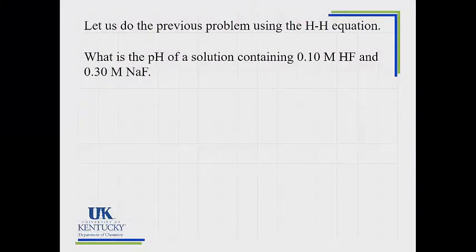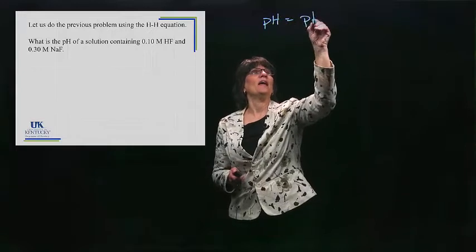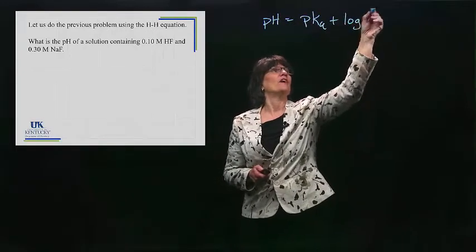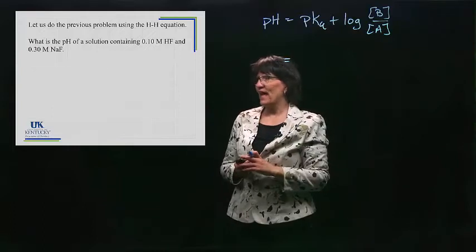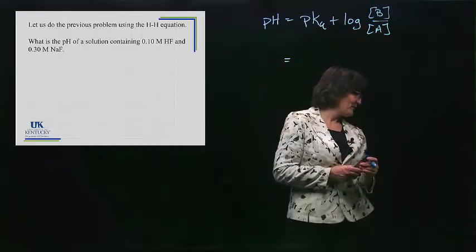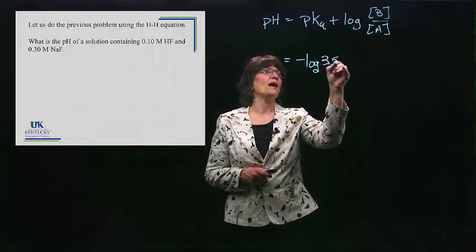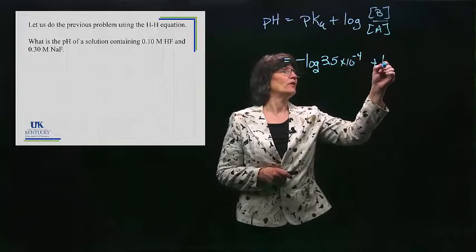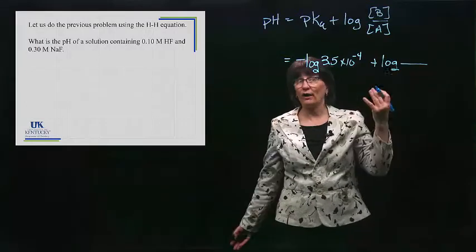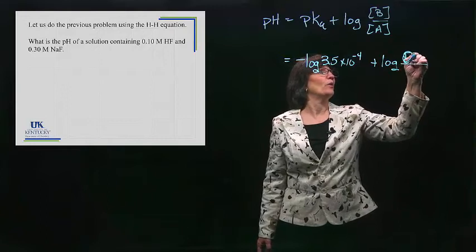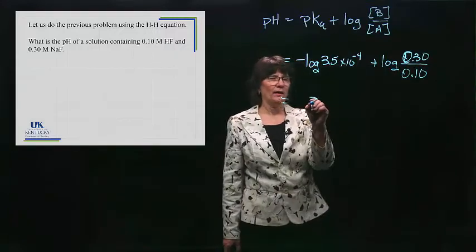So we're going to work this problem again using the Henderson-Hasselbalch equation as soon as I erase my board. So now we're going to do this equation using the Henderson-Hasselbalch equation. First thing we'll do is write the equation down. pH is equal to pKa plus the log of the concentration of the base over the concentration of the acid. They give me the Ka of this acid. It was in the previous problem, so let me look it up here. It was 3.5 times 10 to the minus 4. So pKa is the negative log of the Ka, which is 3.5 times 10 to the minus 4, plus the log of the concentration of the base.